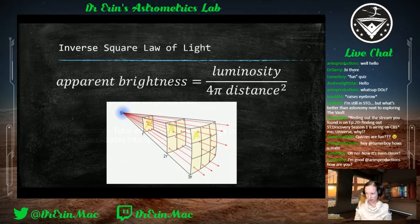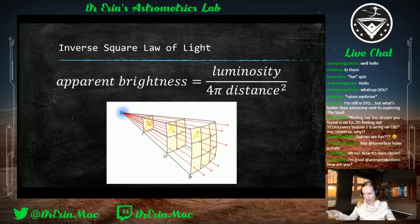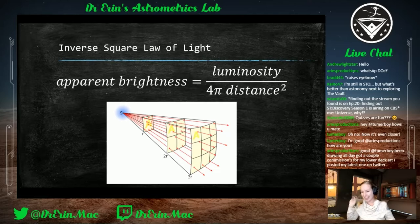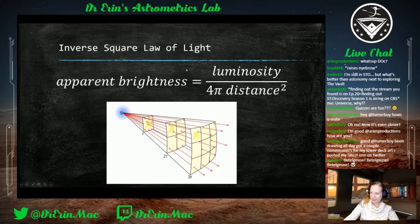Even though Betelgeuse is 15,000 times brighter than Procyon, they appear to be the same brightness because Betelgeuse is further away. We calculate this using: apparent brightness equals luminosity divided by four pi times the distance squared. That four pi times distance squared comes from the surface area of a sphere.